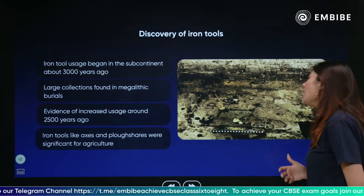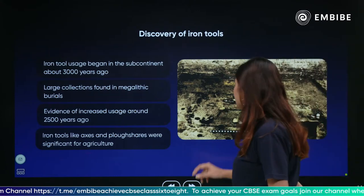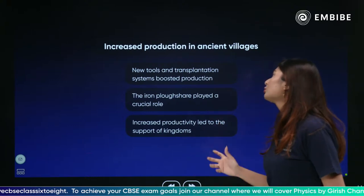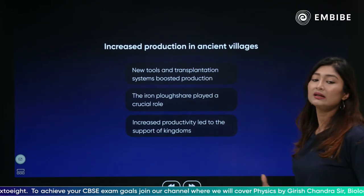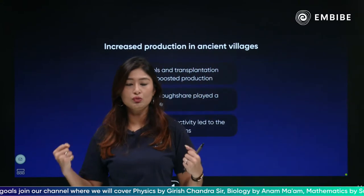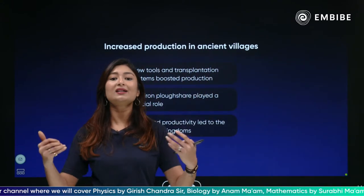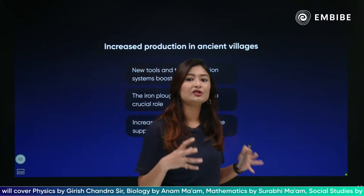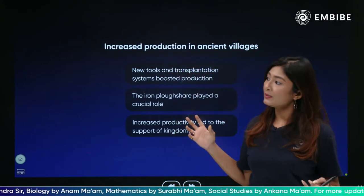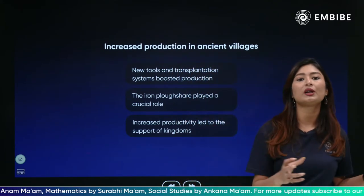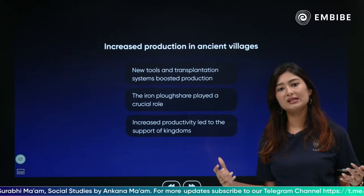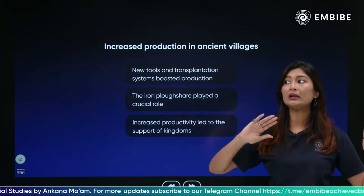Then tools like axes and ploughshares were made, very important for agriculture. New tools and the transportation system slowly boosted. With the discovery of iron, when tools were more feasible to use, agriculture became easier. Similarly, just as industrialization — when machines came into the picture and manufacturing increased greatly — here also with iron coming in and people figuring out how to use animals for transportation, agriculture increased greatly in variation and at a larger and more advanced scale.